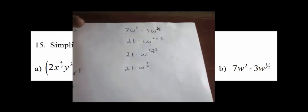For part B: 7w² · 3w^(3/2). The 7 and 3 are outside the exponential, so multiply them to get 21. For the common base w, add exponents: 2 + 3/2. The common denominator is 2, giving 4/2 + 3/2 = 7/2. Final answer: 21w^(7/2).